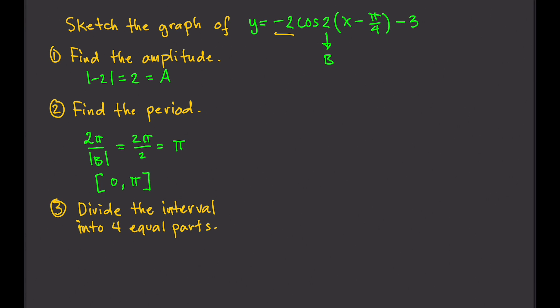We're going to divide the interval 0 to pi into 4 equal parts. So our key x-values are: 0, pi over 4, pi over 2, 3 pi over 4, and pi.